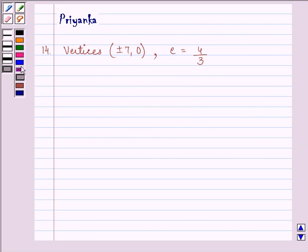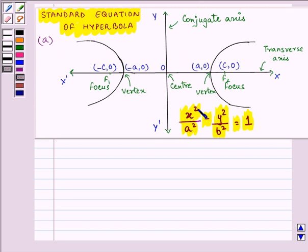Now before proceeding with the solution, we should be well versed that the general equation of a hyperbola is x square by a square minus y square by b square is equal to 1, where the vertices are plus minus a comma 0.